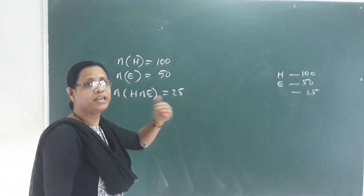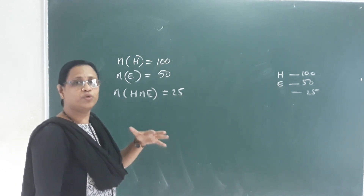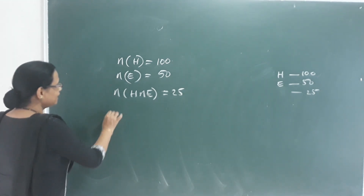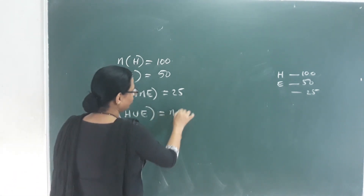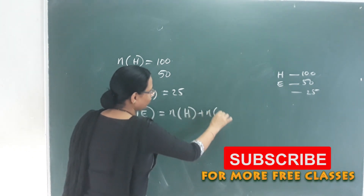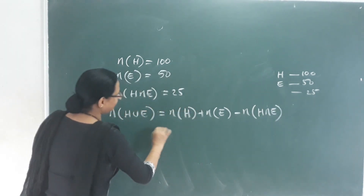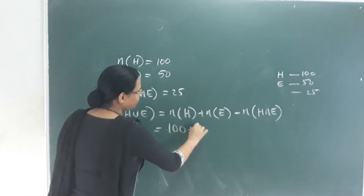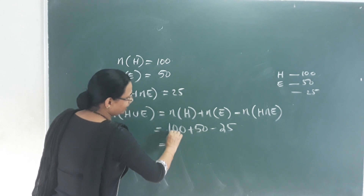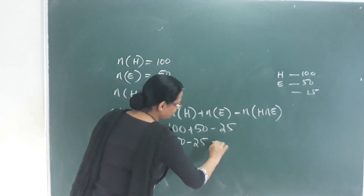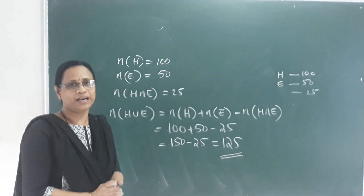We apply the union formula: the number of Hindi union English equals the number of Hindi plus the number of English minus the number of Hindi intersection English. That is 100 plus 50 minus 25, which equals 125. So there are 125 students in the group who know Hindi or English.